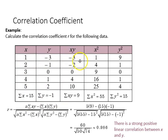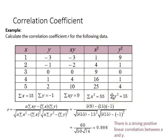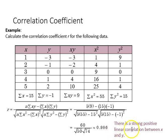Then we have the product over here in this column, and then we have the sum of the product. Over here we have the square of x, and over here we have the square of y, with the sum of the squared x and the sum of the squared y down below. With those values in the bottom row we can plug them into our equation, and in this case we find 0.986, a very strong positive linear correlation.